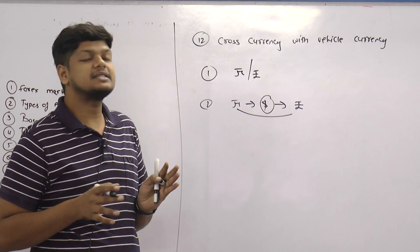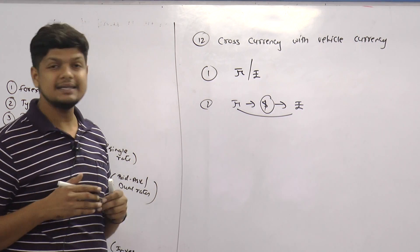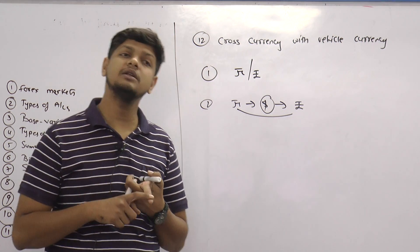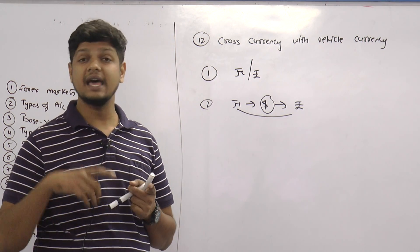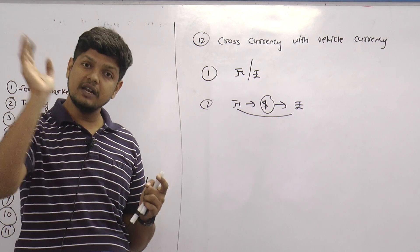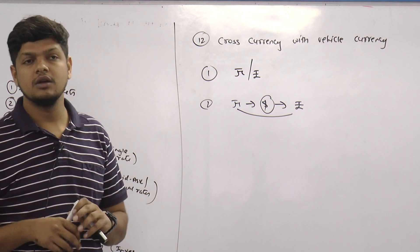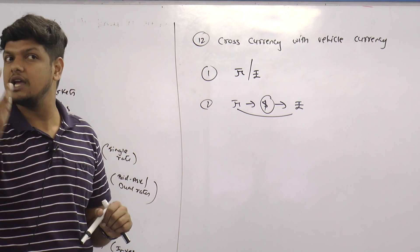Now first let us understand why do we do that. The reasons are that at times there is no direct quote available. Why? Because the countries rarely trade, or even if it is available, it can happen that there is huge illiquidity because of less volume.